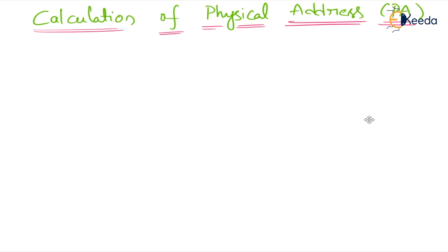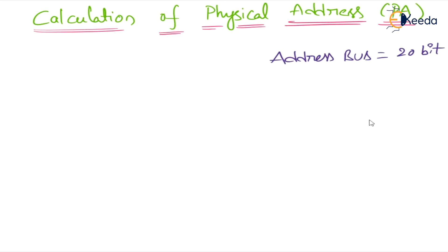What is the importance of the physical address and what formula is required to calculate the physical address? These answers you should tell at the end of the class. Now, what is the address bus size of the 8086 microprocessor? The address bus size is 20 bit.